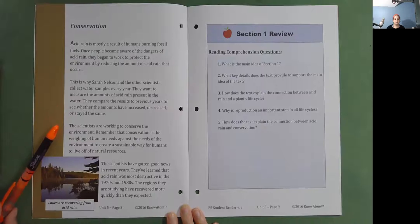The scientists are working to conserve the environment. Remember that conservation is the weighing of human needs against the needs of the environment to create a sustainable way for humans to live off of natural resources. The scientists have gotten good news in recent years. They've learned that acid rain was most destructive in the 1970s and 1980s. The regions they are studying have recovered more quickly than they expected. Lakes are recovering from acid rain.